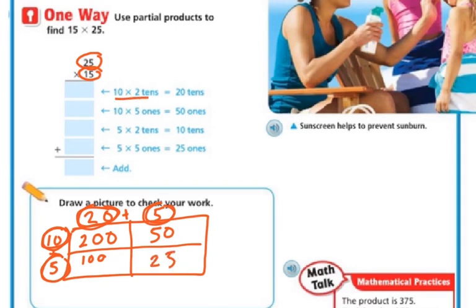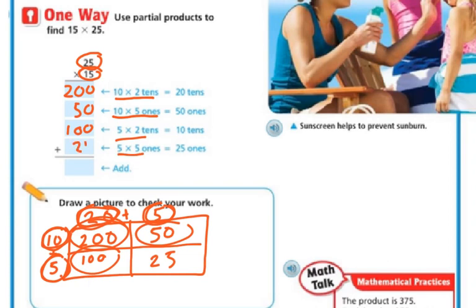So when I'm doing that over here, basically my 10 times the 20 tens or 2 tens was 200. And then this box is my 10 times my 5 ones which is 50. And then I've got my 5 tens times my 2 tens which is 100. And then I've got my 5 ones times my 5 ones which is 25. Make sure you line everything up when you're adding. So you have 5 plus 0 plus 0 plus 0 is 5, 5 plus 2 is 7, and 2 plus 1 is 3. So the answer is 375 minutes.